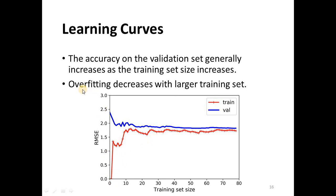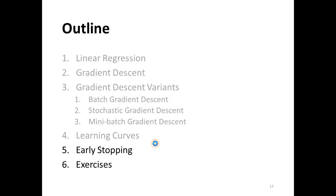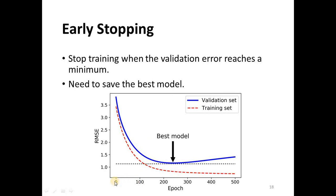Overfitting decreases with a larger training set. Here we have complete overfitting where the error is zero because the training set is very small — the model memorizes all the training set and we get zero error. As the training set size increases, the training error increases because the model no longer memorizes the entire training set.